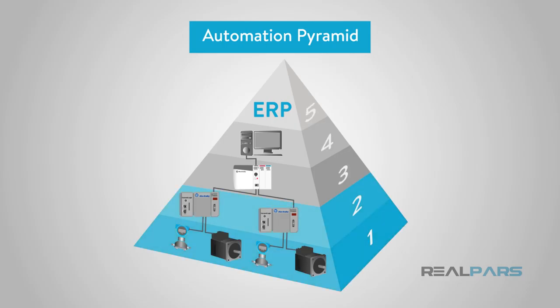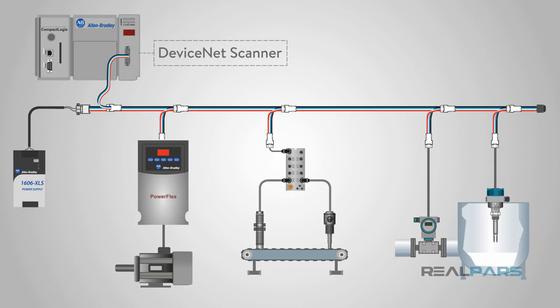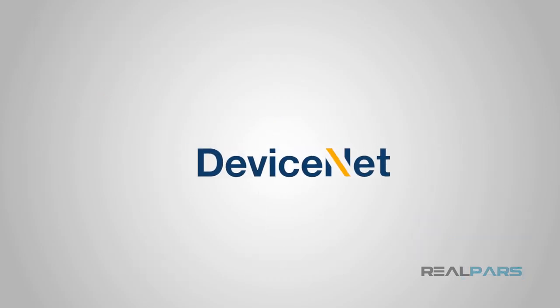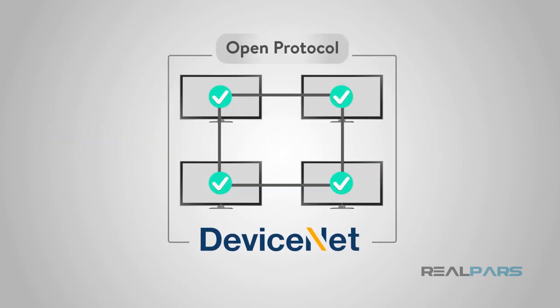DeviceNet is an application-level protocol used in the automation environment. It is a communication tool that allows you to logically talk between a PLC, or Programmable Logic Controller, and many control devices such as motors, conveyors, flow meters, level sensors, etc. Instead of the PLC talking directly to discrete I/O modules, it talks via a DeviceNet scanner. It was originally developed by Allen-Bradley, a Rockwell Automation brand, and they decided to share this new technology with others and make it an open network.